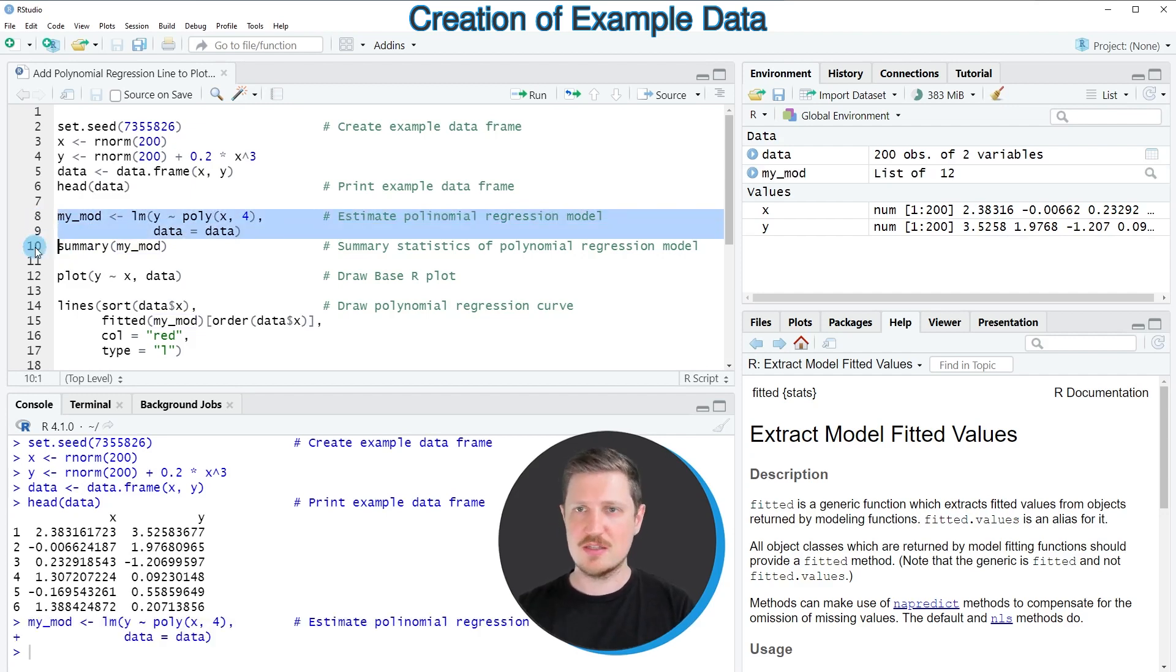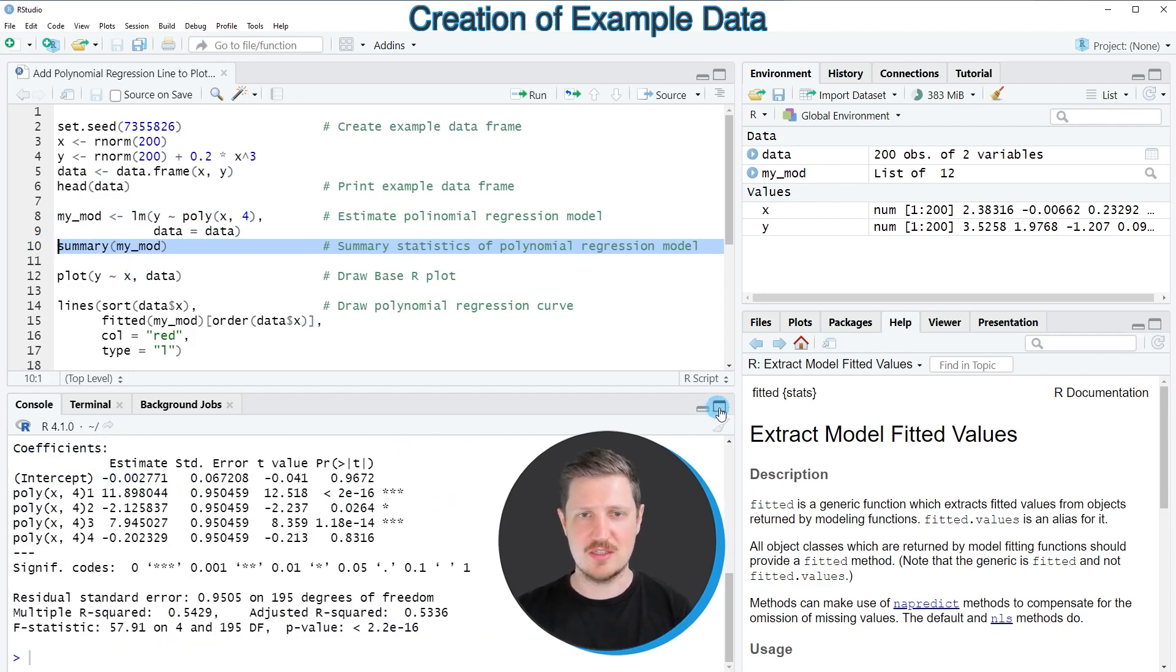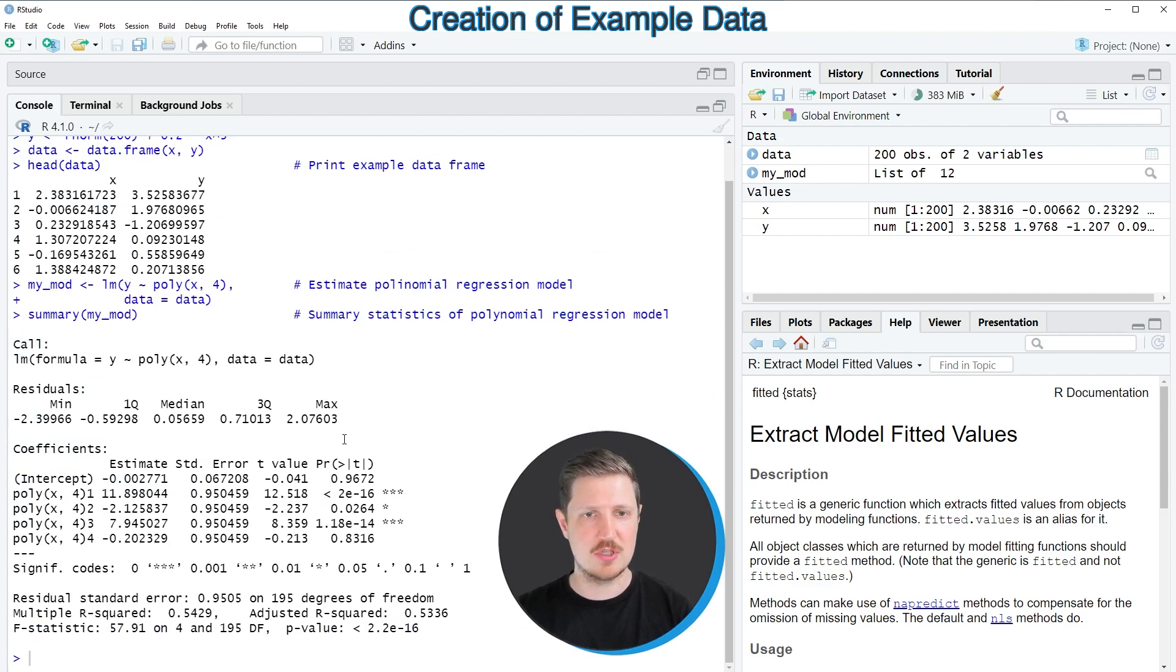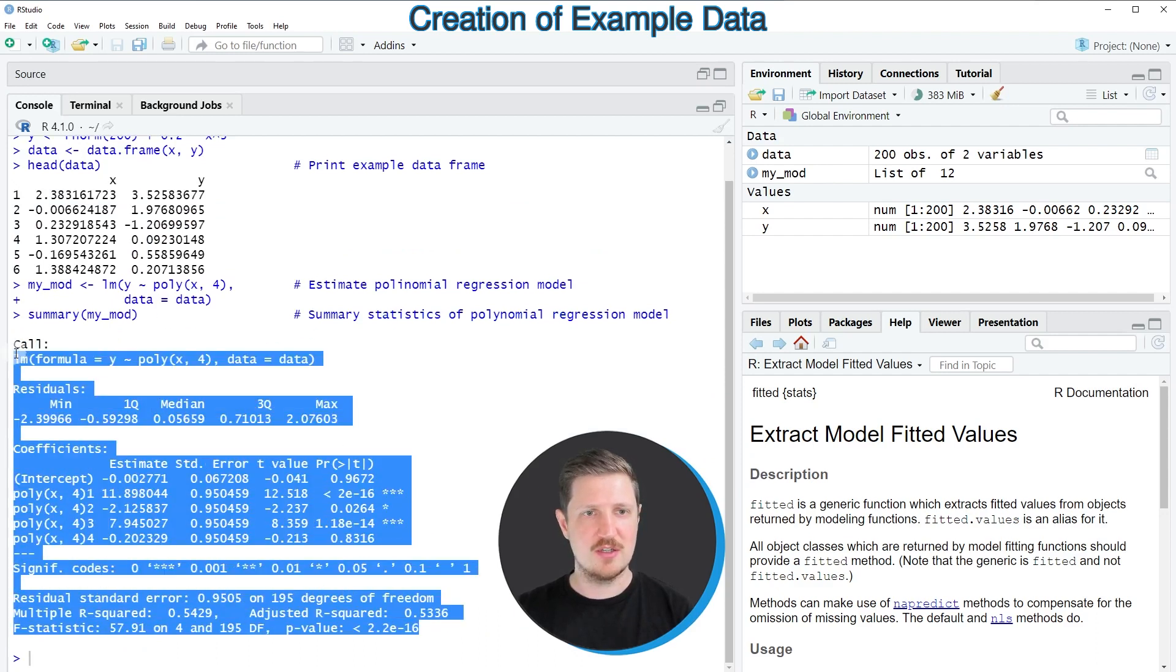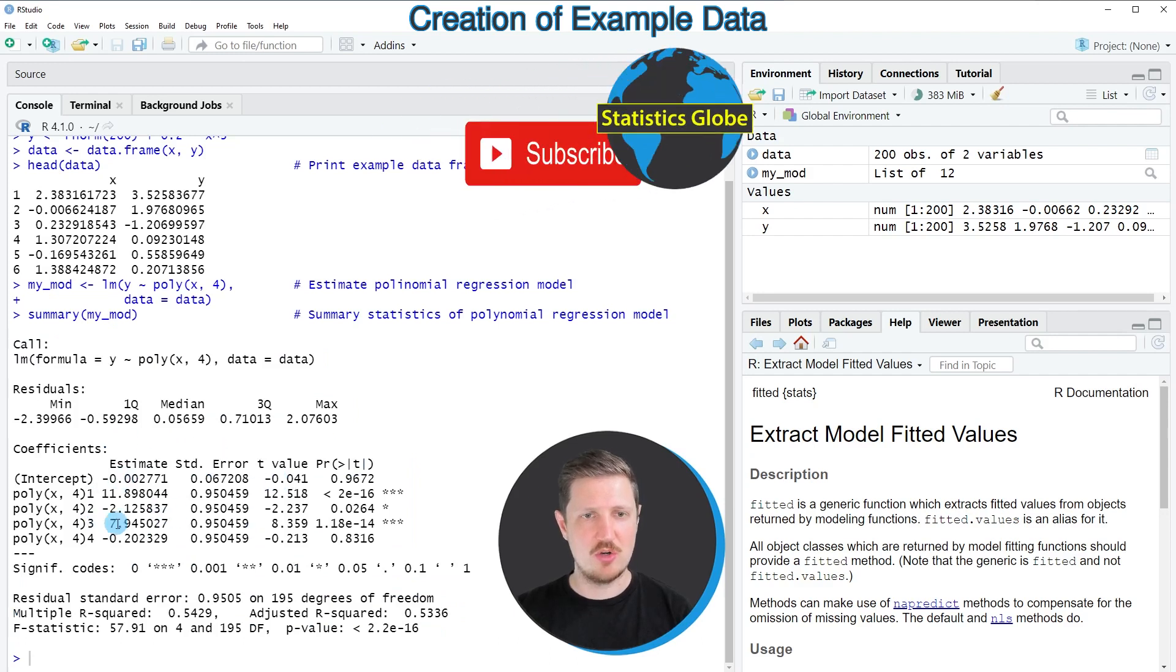So after running these lines of code, a new data object called mymod is appearing at the top right and we can create some summary statistics of this model by running line 10 of the code. And then you can see at the bottom in the R studio console that we have created some summary statistics for our model.